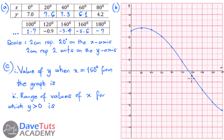With that, we've answered that part of the question. It's good practice to label this graph with the equation y = 3sin(x) + 7cos(x), and to also write the scale on the graph.